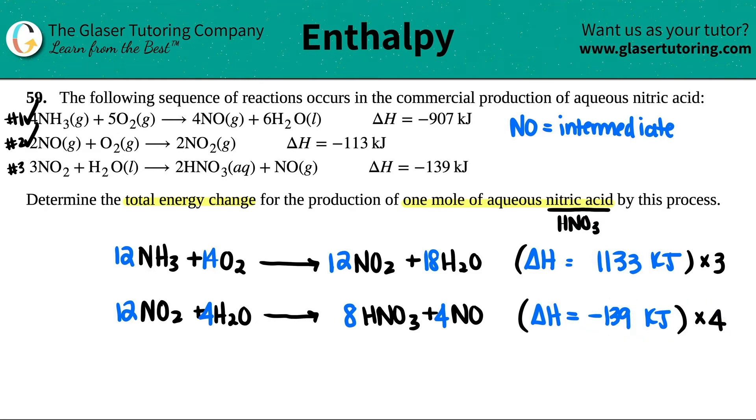Now I just got to multiply these numbers. The first one I'm multiplying by three, the second one by four. Negative 1133 times three, I get negative 3399 kilojoules. So I can get rid of all this.